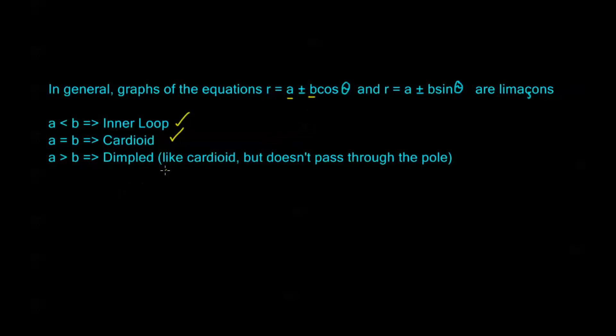And the last case is when my a is greater than b. When a is greater than b, we call this dimpled. So it looks just like a cardioid. It's mostly circular and then kind of dimples in at one point but at that dimple it doesn't hit the pole and in fact it doesn't pass through the pole anywhere. So the dimple is going to be somewhere further out. We'll see something like this in some of the upcoming videos.